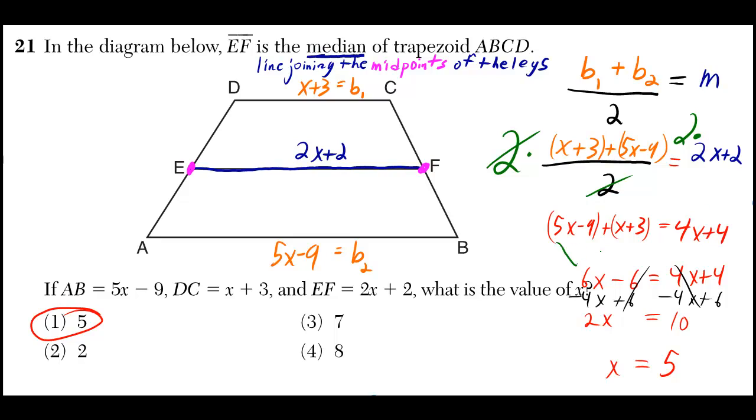And then I combine my two like terms there. And then also there. And that gives me 6X minus 6. That's equal to 4X plus 4.